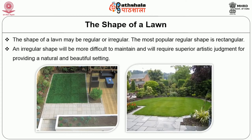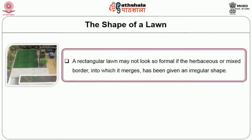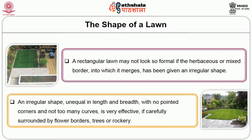An irregular shape will be more difficult to maintain and it will require superior artistic judgment for providing a natural and beautiful setting. A rectangular lawn may not look so formal if the herbaceous or mixed border into which it merges has been given an irregular shape. An irregular shape, unequal in length and breadth with no pointed corners and not too many curves, is very effective if carefully surrounded by flowering borders, trees or rockery.